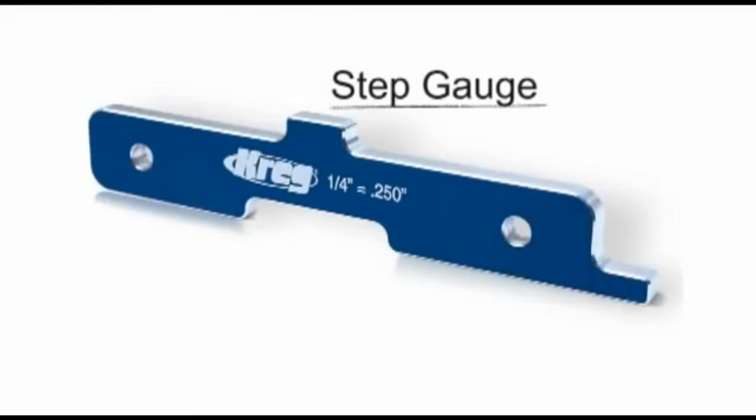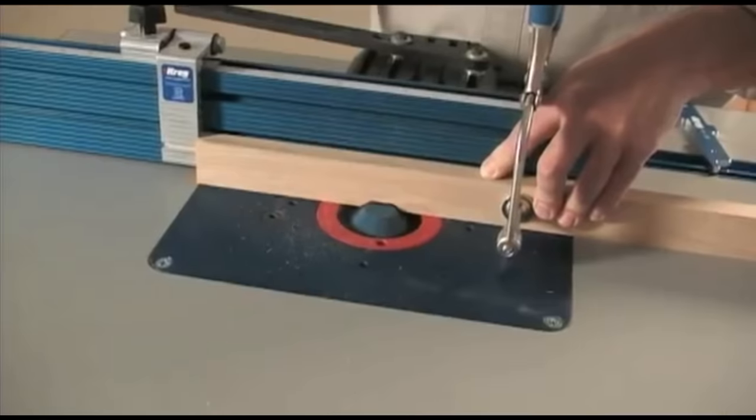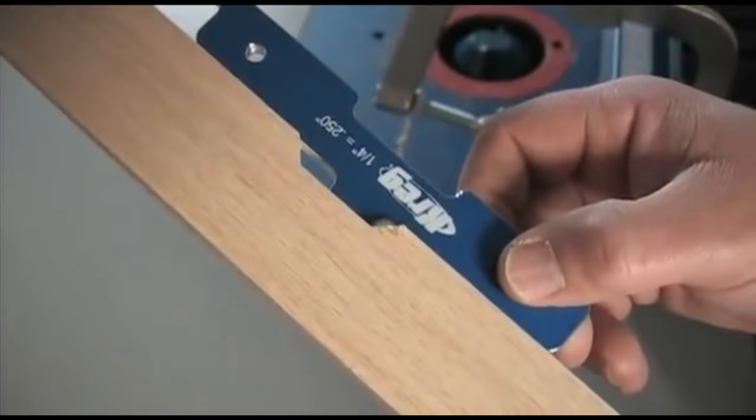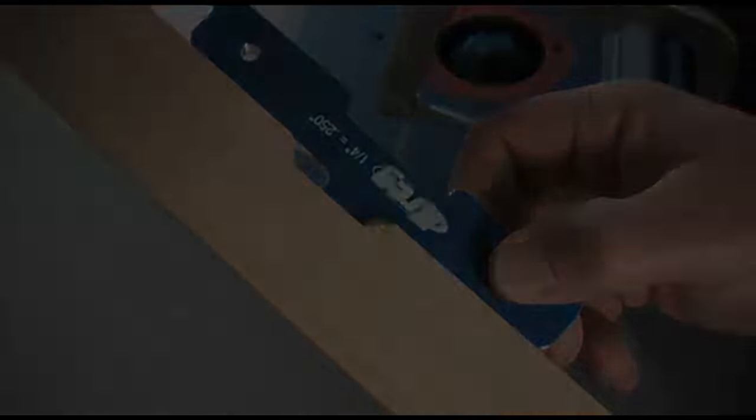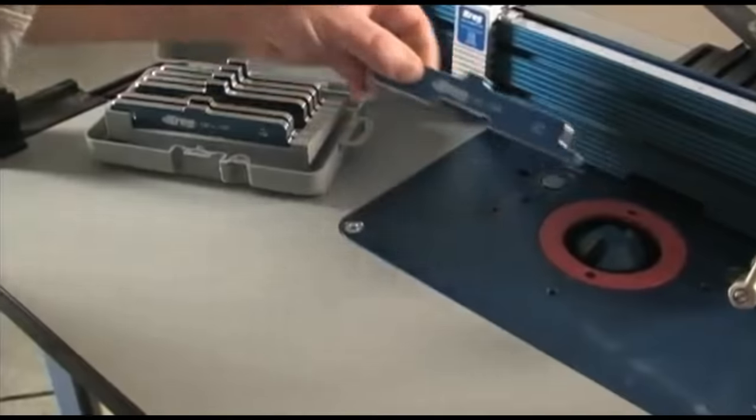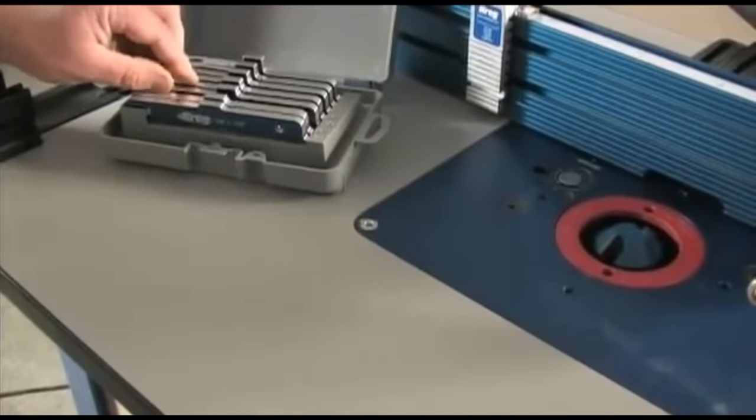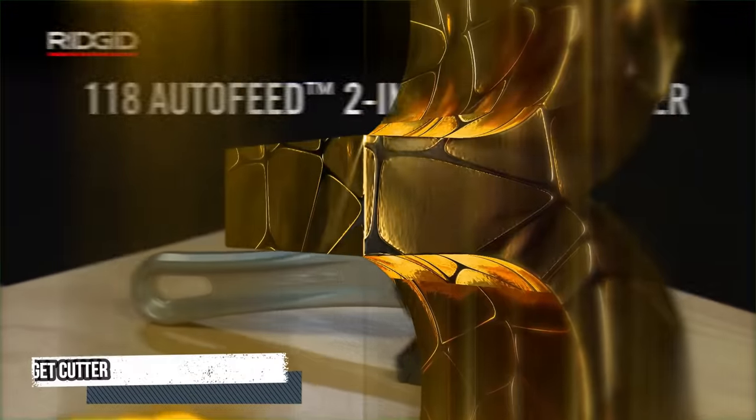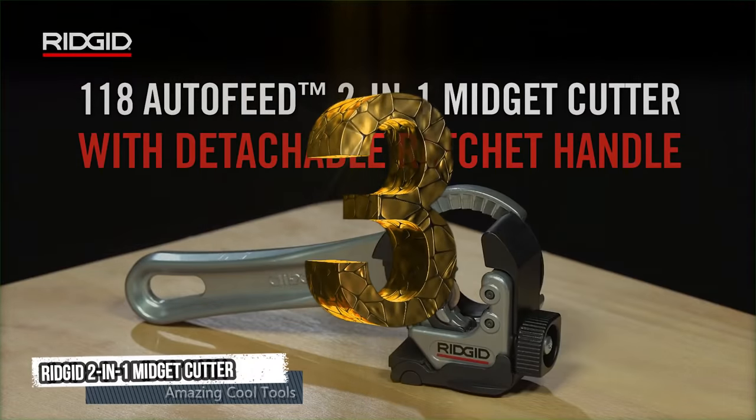Finally, in certain applications you can check the accuracy of the cut using the step gauge on the setup bar. The bars are stored and organized in a convenient case so they can be reached for fast and accurate setups. Third Tool: Rigid 2-in-1 Midget Cutter.